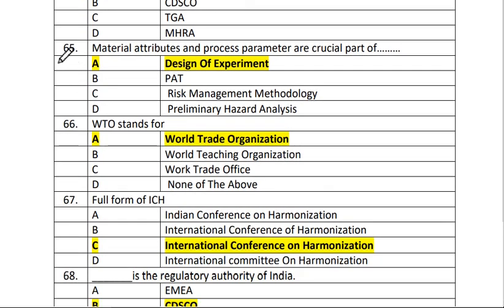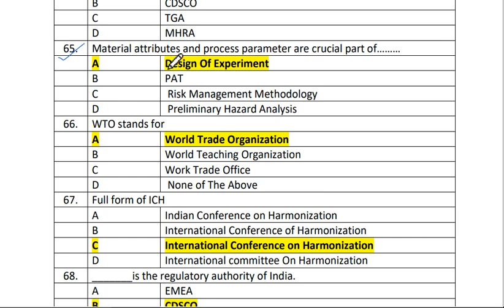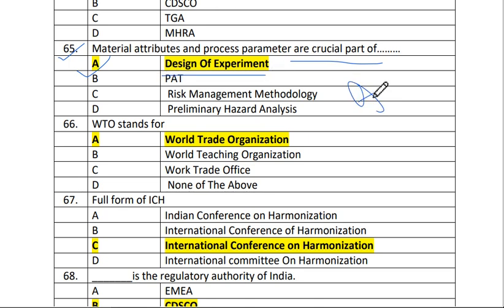Next is question number 65. Material attributes and process parameters are a crucial part of? The answer is A, design of experiment.